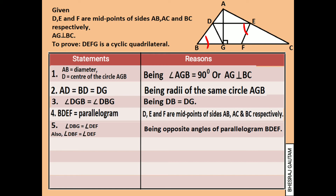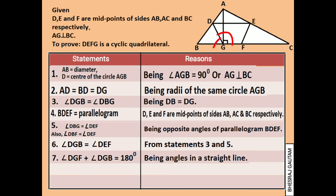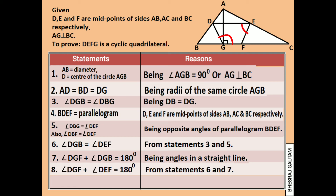Comparing statements 3 and 5, we can now say that angle DGB equals angle DEF. If we add angle DGF and angle DGB, it is 180 degrees, as these angles are formed at a point on a straight line. Coming to the next step, angle DGF plus angle DEF is also 180 degrees, replacing angle DGB with angle DEF as they are equal according to statement 6.